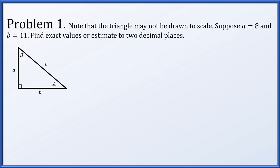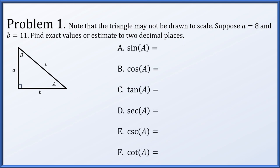The triangle may not be drawn to scale. Suppose that side length a is equal to 8 and side b is equal to 11. Find exact values or estimate to two decimal places the sine, cosine, tangent, secant, cosecant, and cotangent of A. So first in the diagram, let's replace our given side lengths. We have an 8 across from angle A and an 11 adjacent to it. Now we can use the Pythagorean theorem to find c. So 8 squared plus 11 squared equals c squared. C squared is 185, so c is the positive square root of 185.